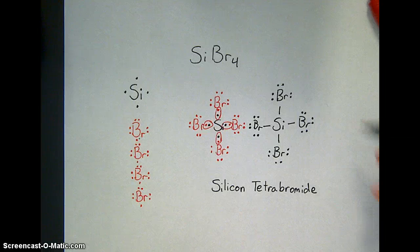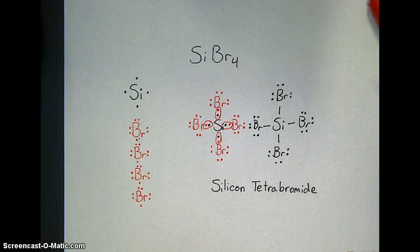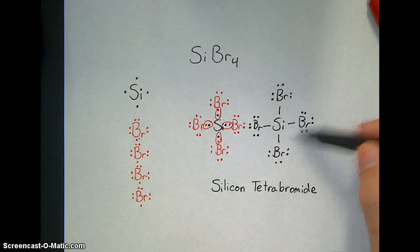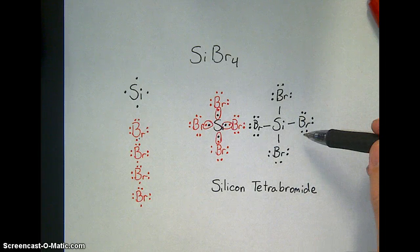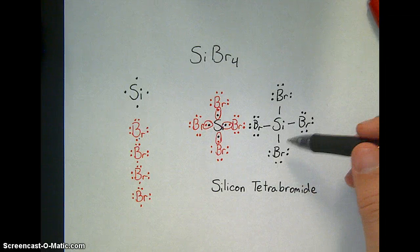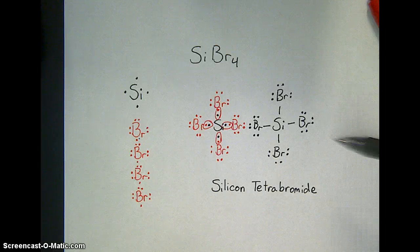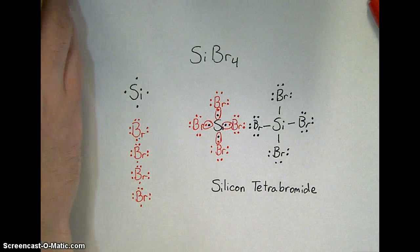You'll notice this structure is a lot like the structure of CH4 that we drew earlier. We call this structure tetrahedral. There are four bonds. And it makes a cool little triangular pyramid shape if we were to put the silicon at the center. There we go. Silicon tetrabromide.